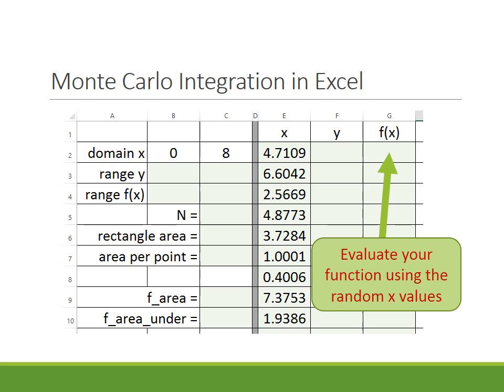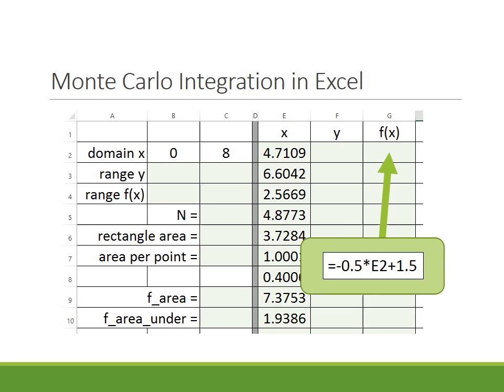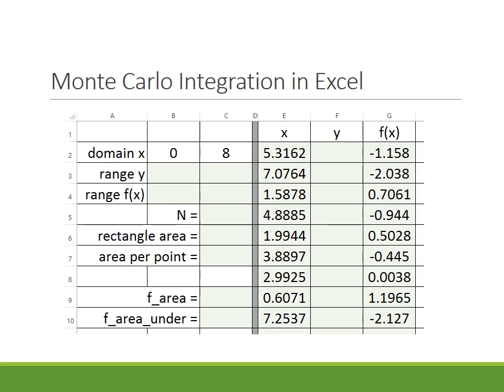Next, I want to evaluate the function of X. In this case, the function is minus 0.5 times X plus 1.5. For X, I'm referencing cell E2. When I copy that formula and paste it down, it calculates F(X) for each of the randomly generated X values. Note that the random numbers recalculate every time you enter a cell or recalculate.